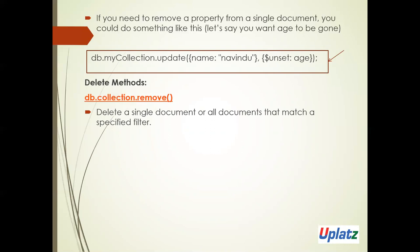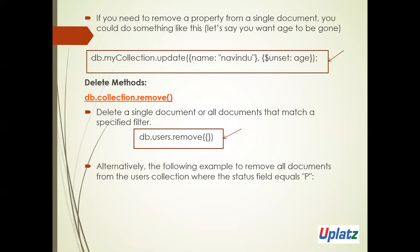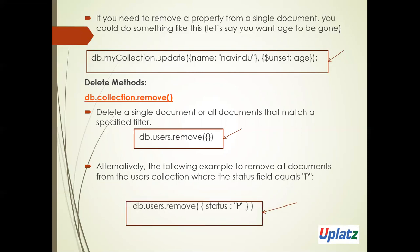Next is delete. We have four methods in delete as well — let's see them one by one with examples. db.collection.remove will remove a single document or all documents based on the specified filter. For example, db.collection.remove with status 'p' will match and remove all documents that have a status of 'p' from the collection.